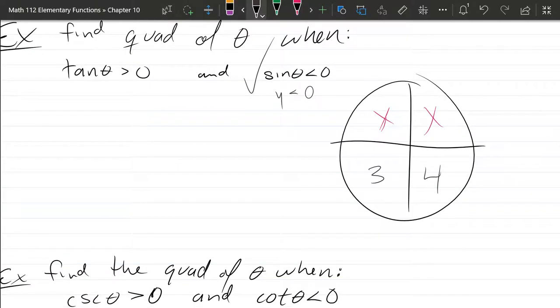Well, everybody's positive in quadrant one. So tangent being positive could put theta in quadrant one. However, we've already eliminated quadrant one. What other quadrant is tangent positive in?